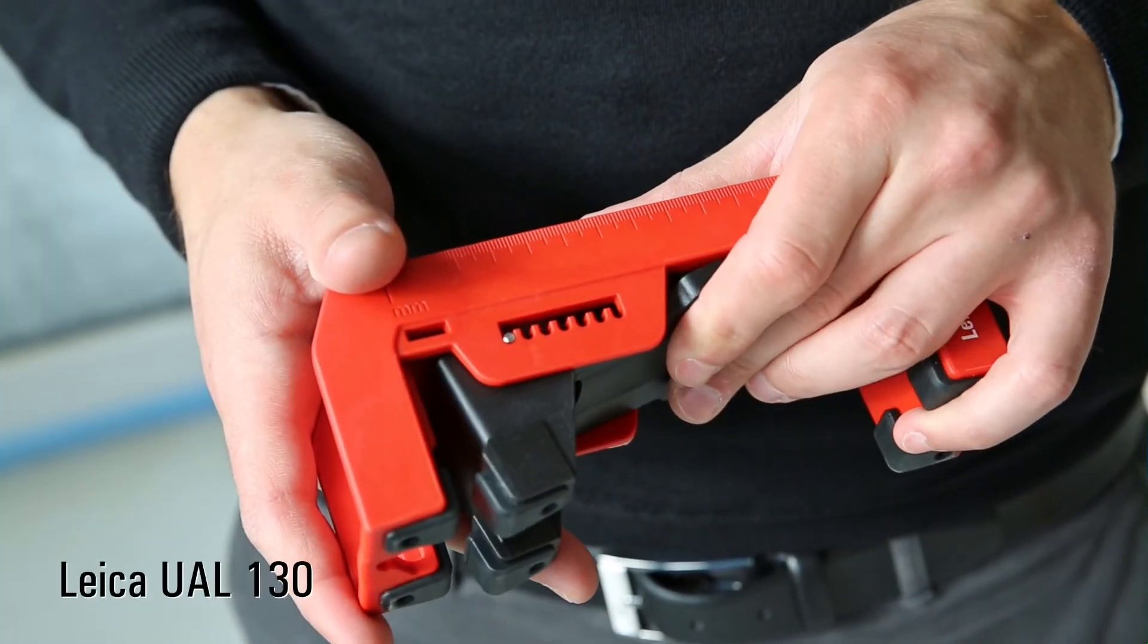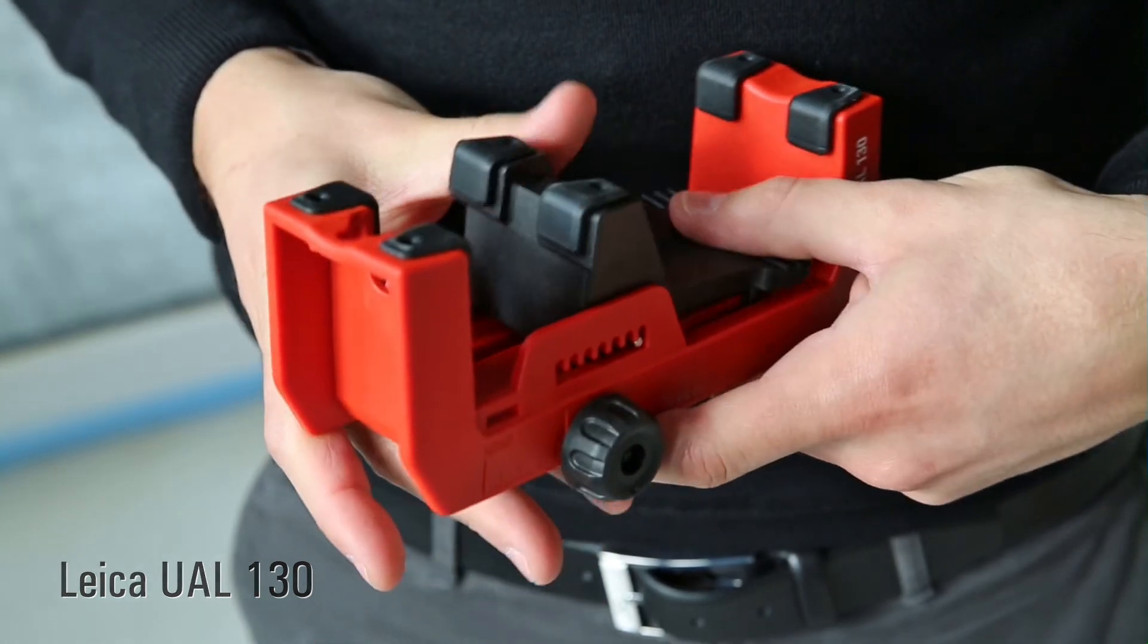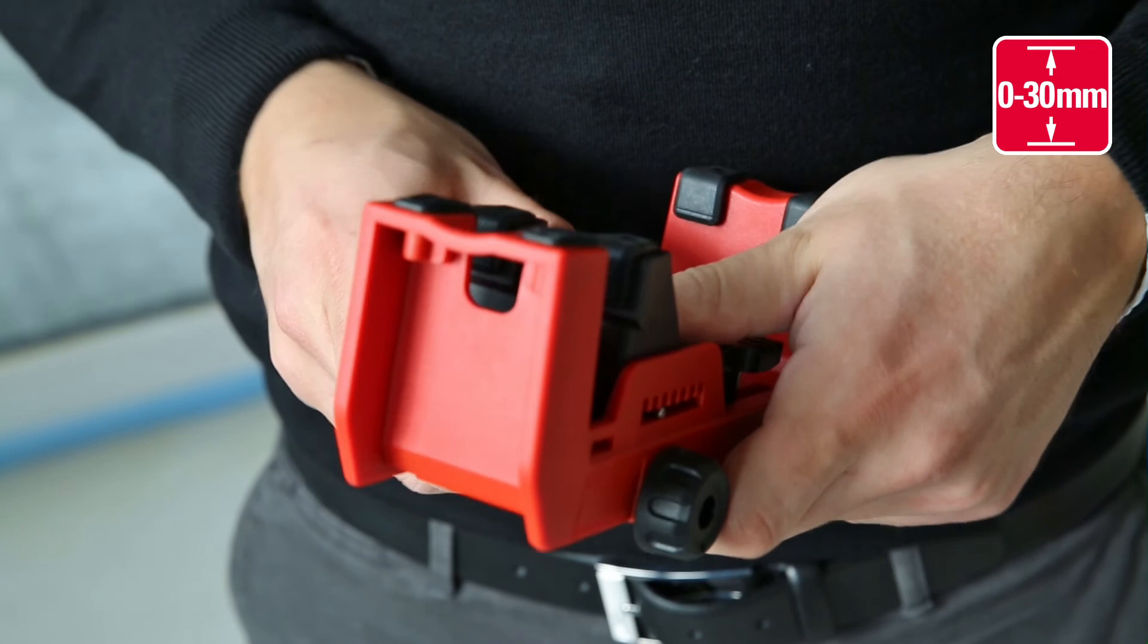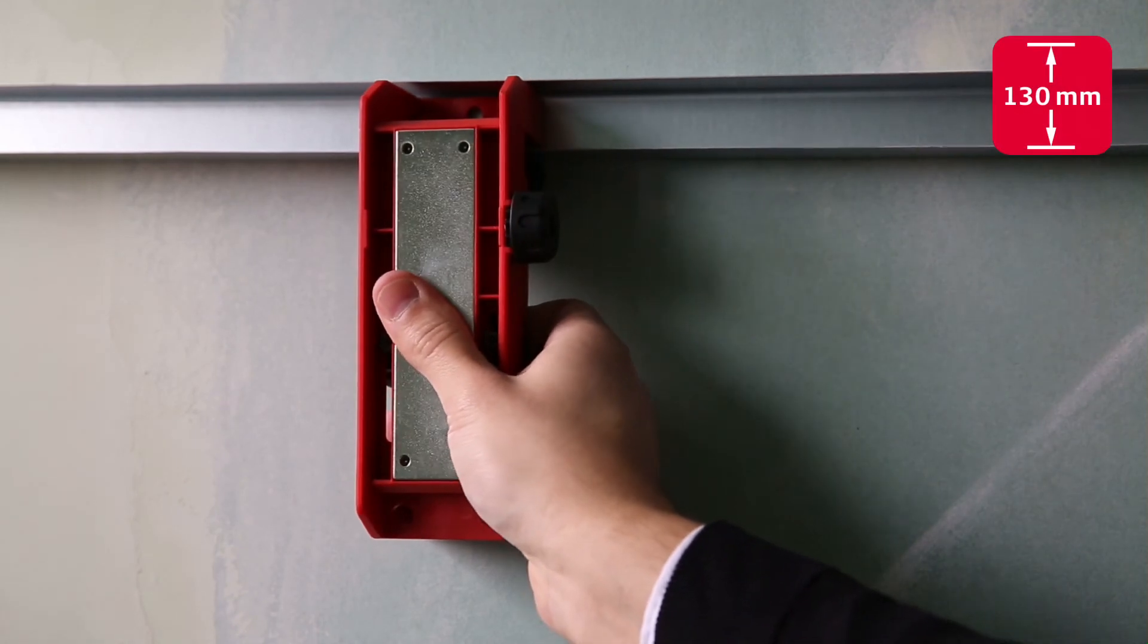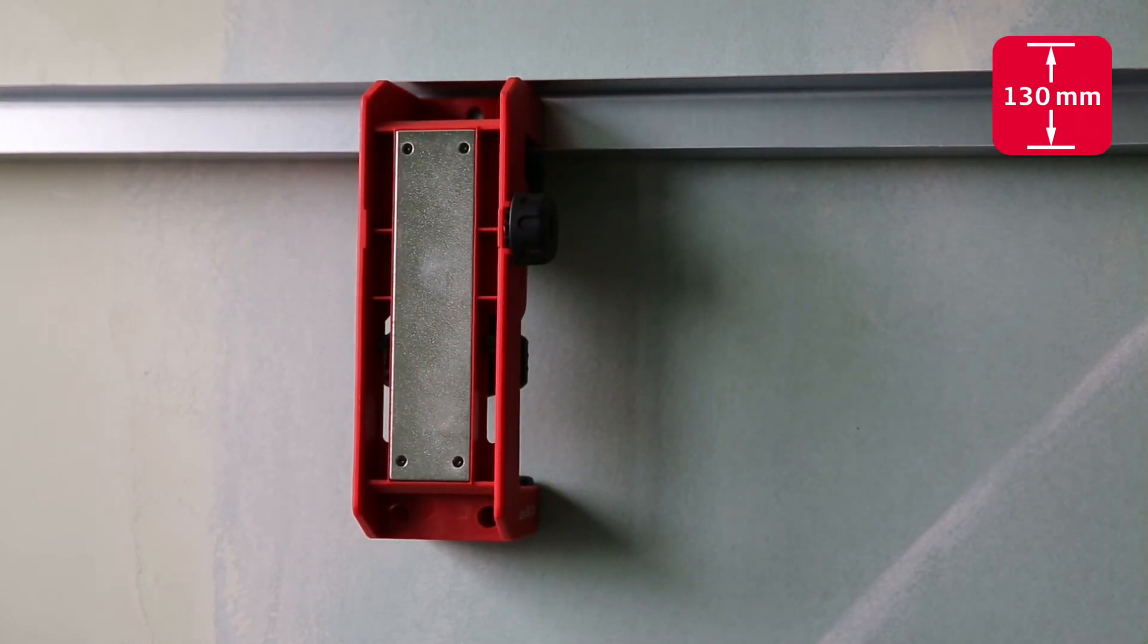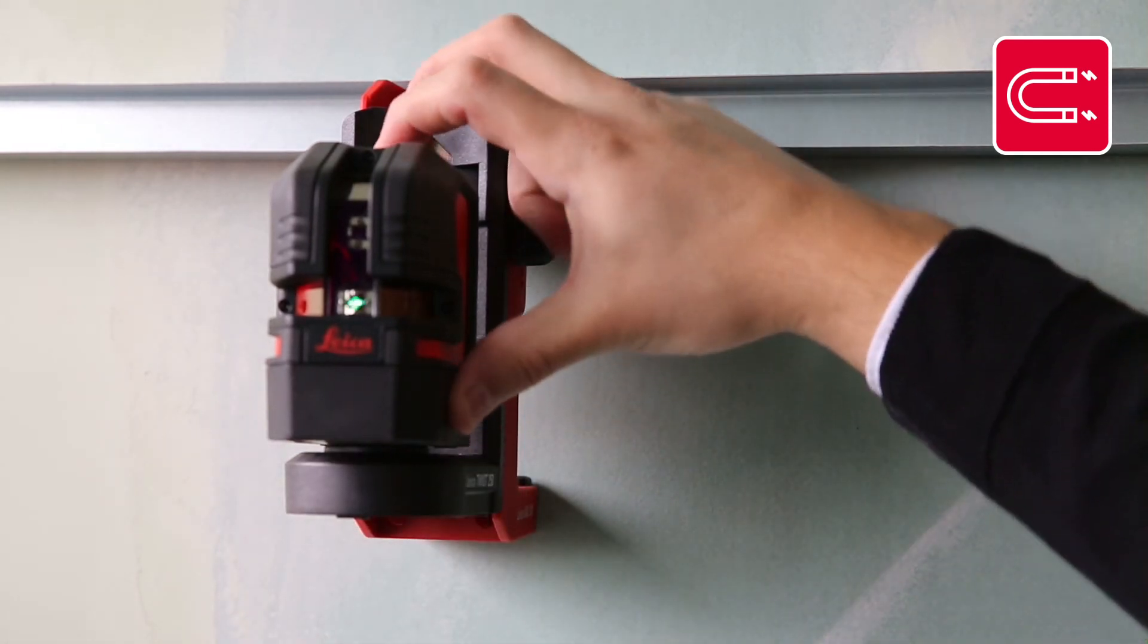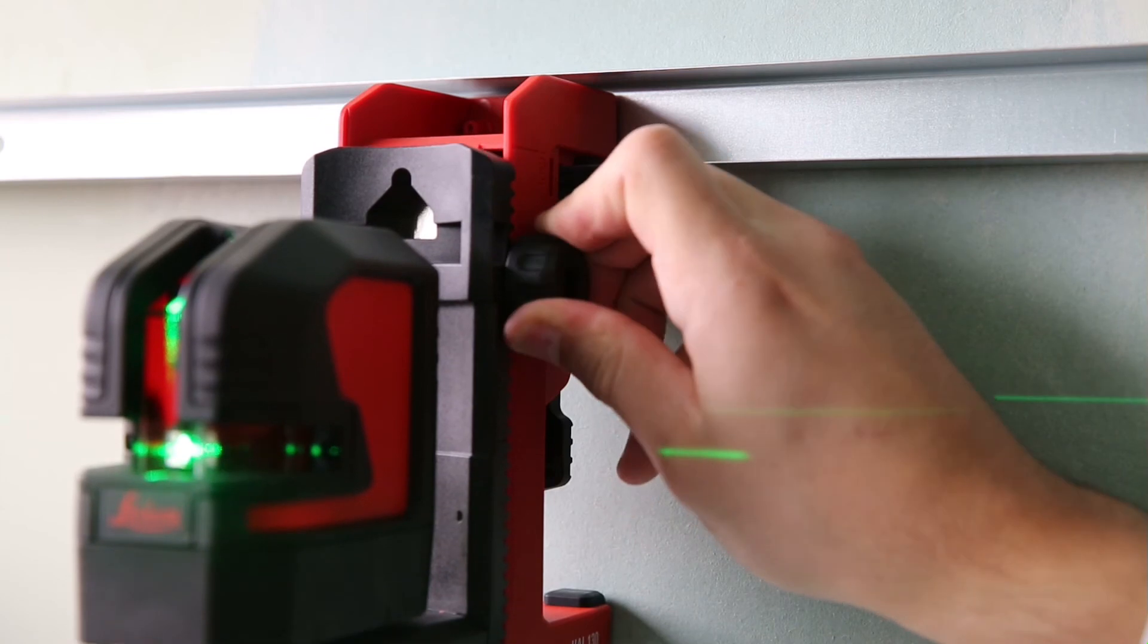The UAL 130 wall mount adapter can be attached to tracks and bars up to 30 millimeters thick with its adjustable clamp. This universal adapter allows you to attach and adjust the height of a Leica Lino by 130 millimeters. Simply connect the magnetic twist adapter to the wall mount and position the laser precisely to the right reference height.